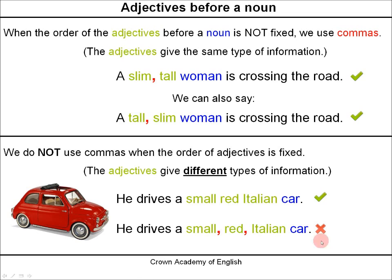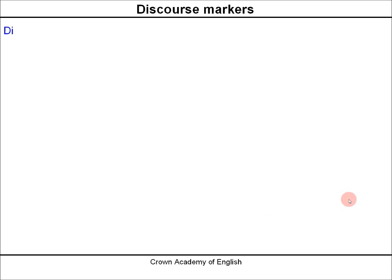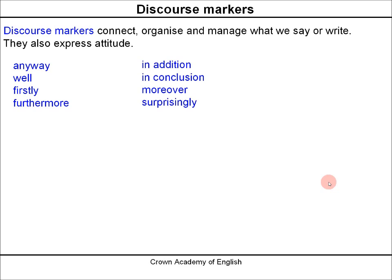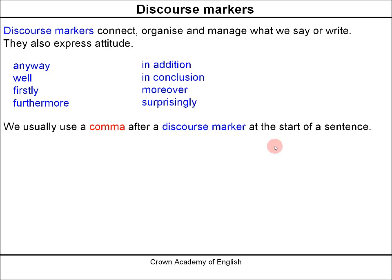Discourse markers. Discourse markers connect, organise and manage what we say or write. They also express attitude. Here are some common examples: anyway, well, firstly, furthermore, in addition, in conclusion, moreover, surprisingly. We usually use a comma after a discourse marker at the start of a sentence.